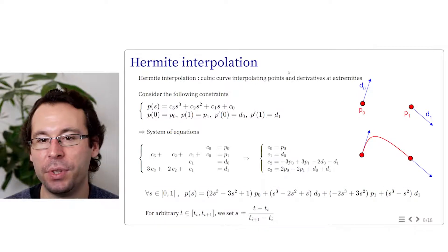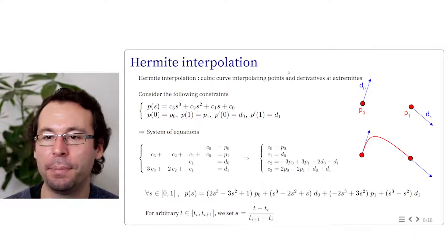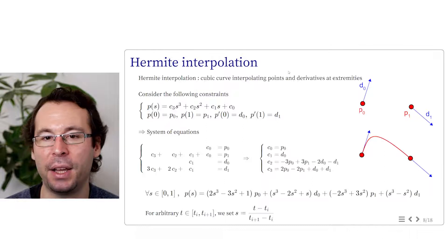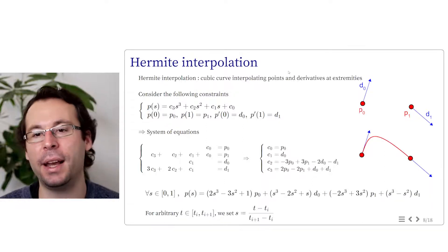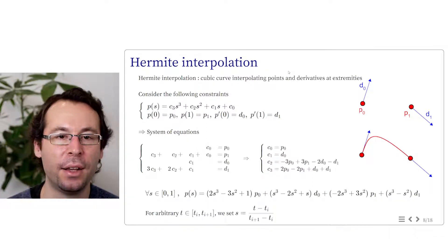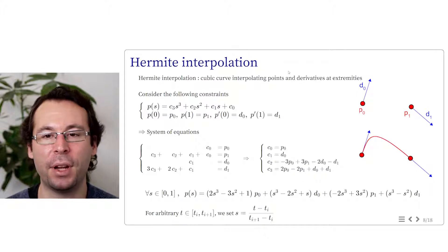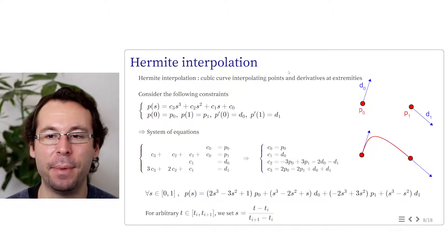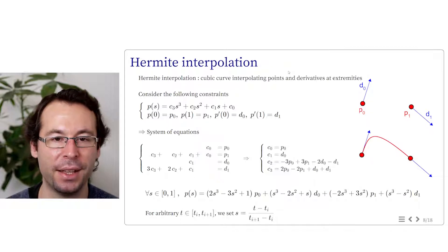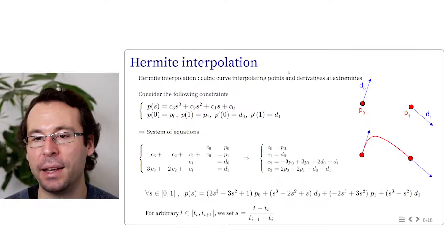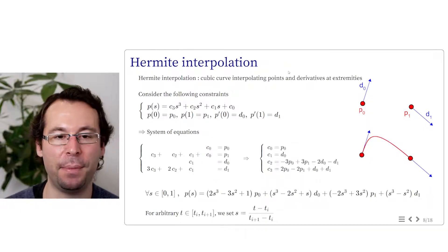This gives a system of linear equations on the constants. We can solve this system to find the expression of the constants with respect to P0, P1, D0 and D1. This is the general form of the cubic polynomial P of s with respect to the input values. I use s varying between 0 and 1, but in practice we have a time variable varying between ti and ti+1. So we can apply the change of variable s equals t minus ti divided by ti+1 minus ti to express the final trajectory with the time parameter.